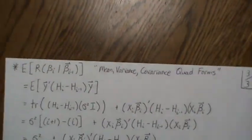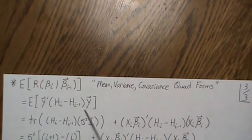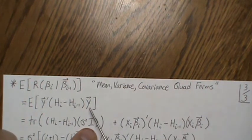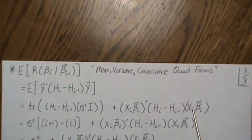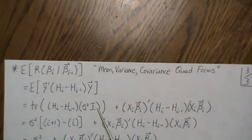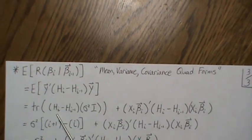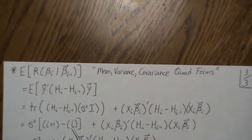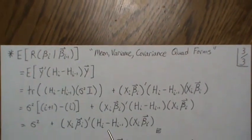Now let's find the expected value of the Type 1 sum of squares, which in matrix notation is y'(Hᵢ − Hᵢ₋₁)y. Using the mean and covariance of quadratic forms, the expected value equals trace((Hᵢ − Hᵢ₋₁) · σ²I) plus μy'(Hᵢ − Hᵢ₋₁)μy. Since σ² is constant it comes out front, and the trace of the difference of these perpendicular projection matrices is (i+1) − i = 1 — so the rank of Hᵢ − Hᵢ₋₁ is one, which will play a part later. So the expected value equals σ² plus the non-centrality term. The expected value is always at least as large as σ², because Hᵢ − Hᵢ₋₁ is a perpendicular projection matrix, making that quadratic form positive semi-definite.